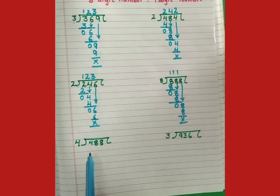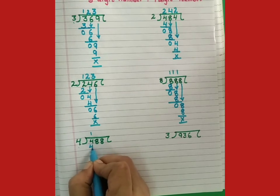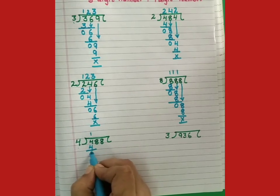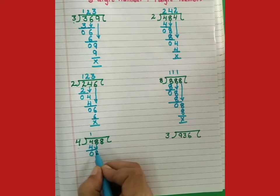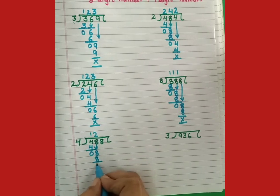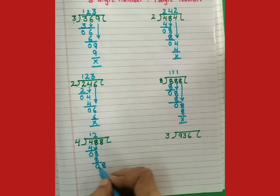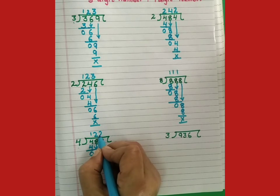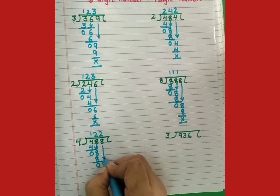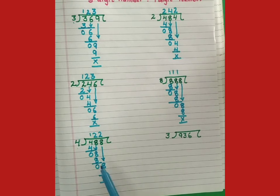Next sum is 488 divided by 4. Students, first digit kya hai 4. 4 kya table me 4 1 pe. 4 ones are 4. 4 minus 4, 0. Now we will bring down 8. 4 twos are 8. 8 minus 8, 0. Now we will bring down next number 8. 4 twos are 8. Students when we divide 488 by 4, quotient is 122.